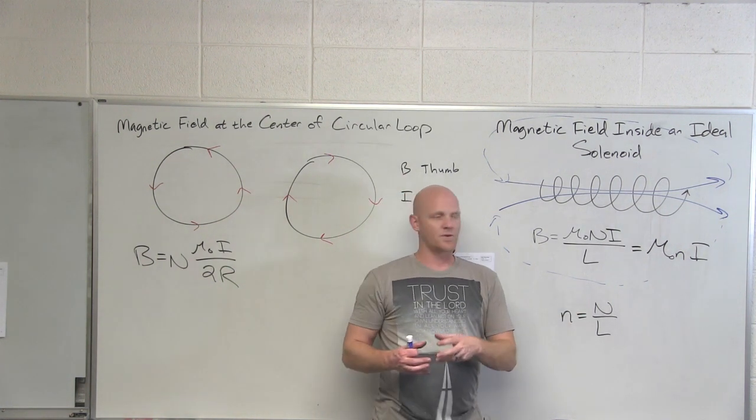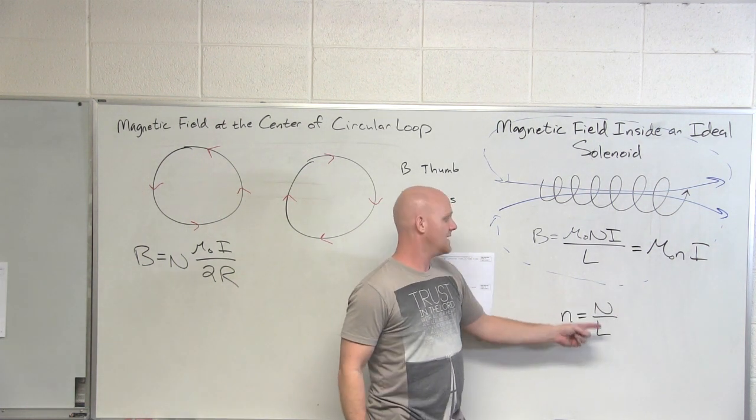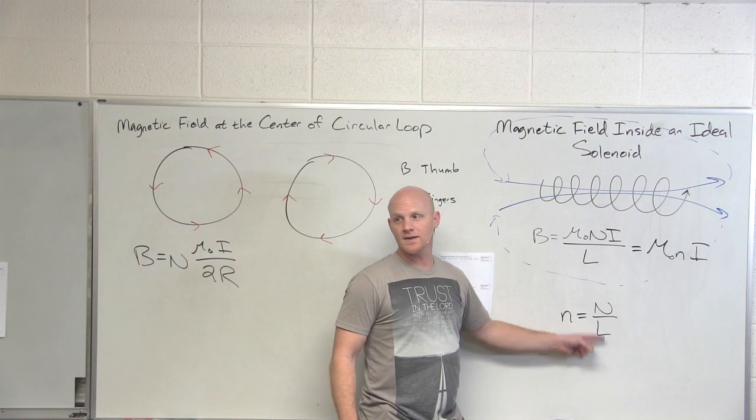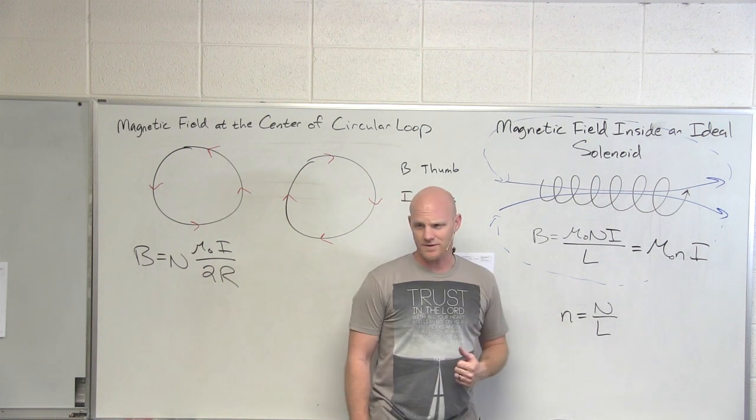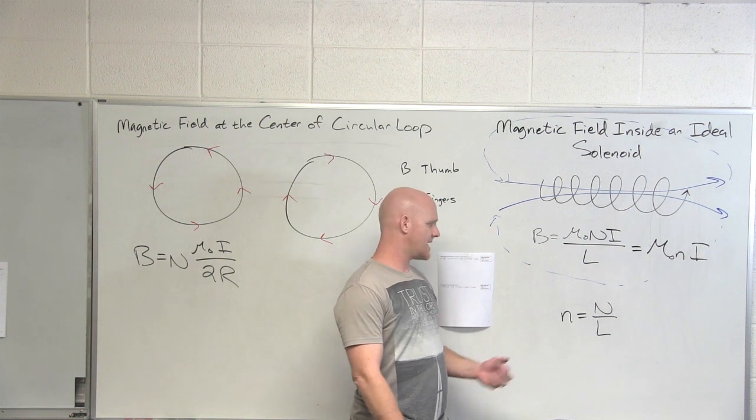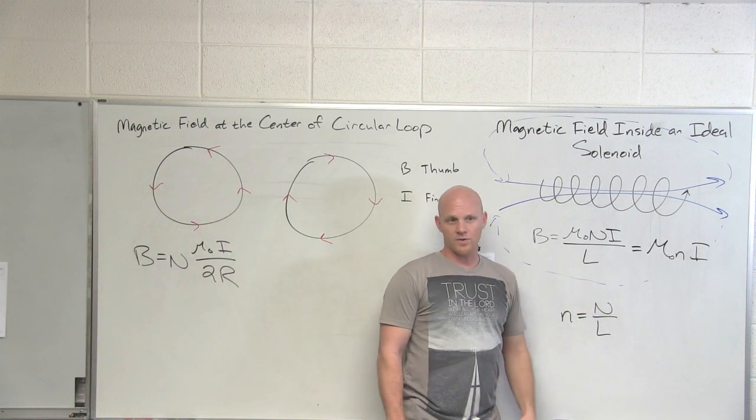Sometimes these solenoids can be variable in length. You might know the overall length and number of turns - great if you do. But if all you know is like 50 turns per centimeter or 50 turns per meter, then you can still plug in even if you don't know the absolute length and the absolute total number of turns.